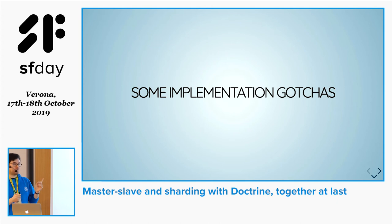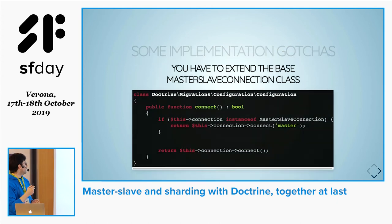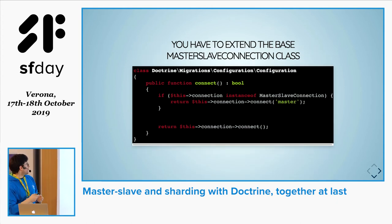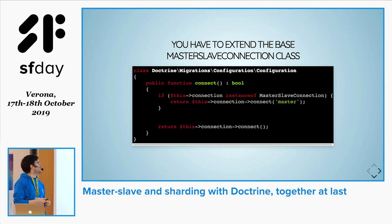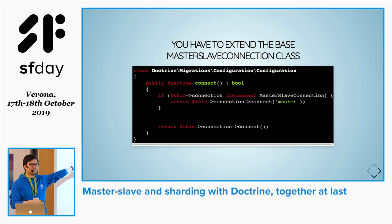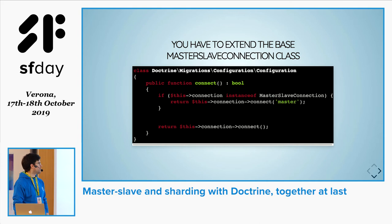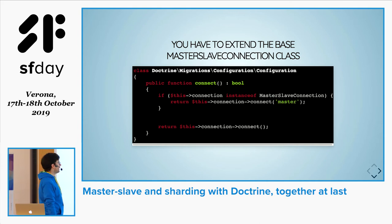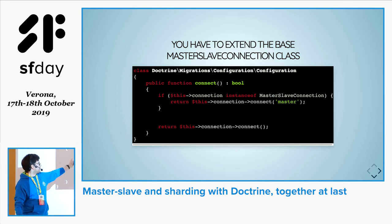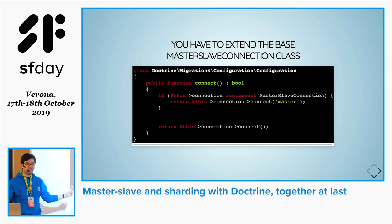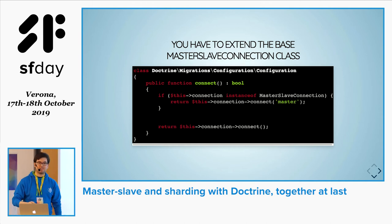These are some things we found out in the process. We were forced to extend the base master-slave connection class. This is because there is a check that is hardcoded in a Doctrine configuration file. If we did not want to break everything, we had to find a way to keep that check true — so we had to extend the base master-slave class.